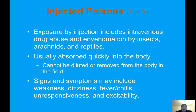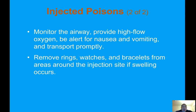Exposure by injection includes intravenous drug abuse and envenomation by insects, arachnids, and reptiles. The substance is usually absorbed quickly into the body and cannot be diluted or removed in the field. Signs and symptoms may include weakness, dizziness, fever, chills, unresponsiveness, and excitability. Monitor the airway, provide high-flow oxygen, be alert for nausea and vomiting, and transport promptly. Remove rings, watches, and bracelets from areas around the injection site if swelling occurs.